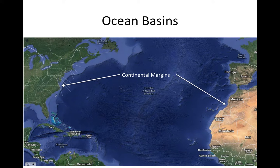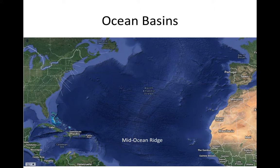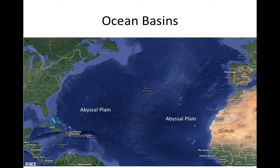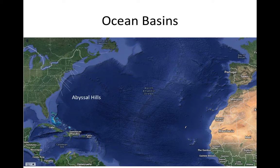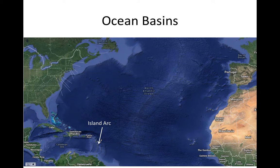To summarize, the features of ocean basins include: the continental margins — the submerged edges of the continents; mid-ocean ridges — elevated linear regions formed by divergent plate boundaries where new oceanic crust forms and spreads away; the abyssal plains — vast, flat, sediment-covered areas in between the margins and the ridges; abyssal hills — extinct volcanoes rising from the abyssal plains; and deep sea trenches that form along subduction zones, with volcanic island arcs running along them.